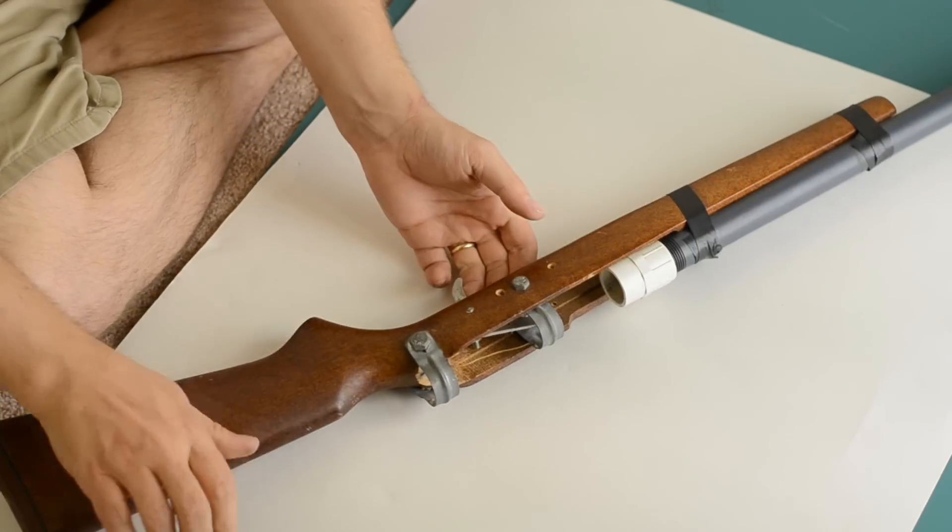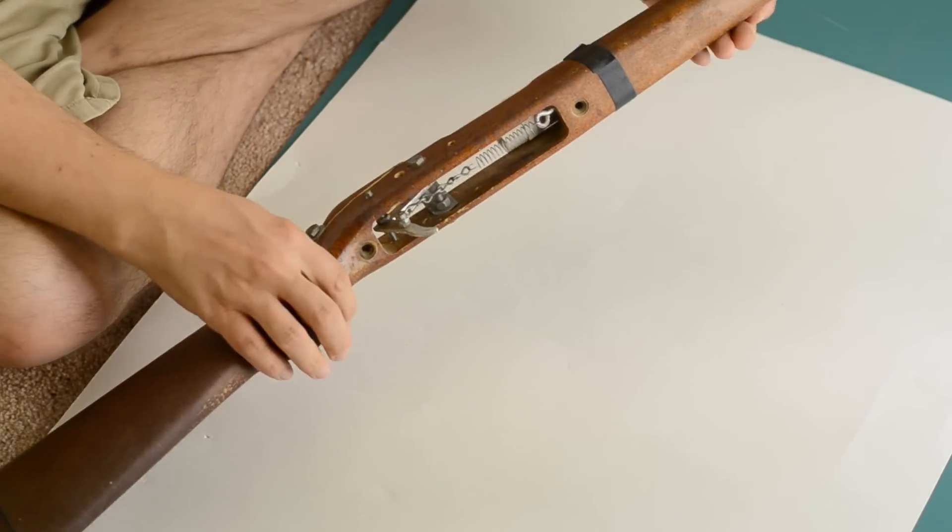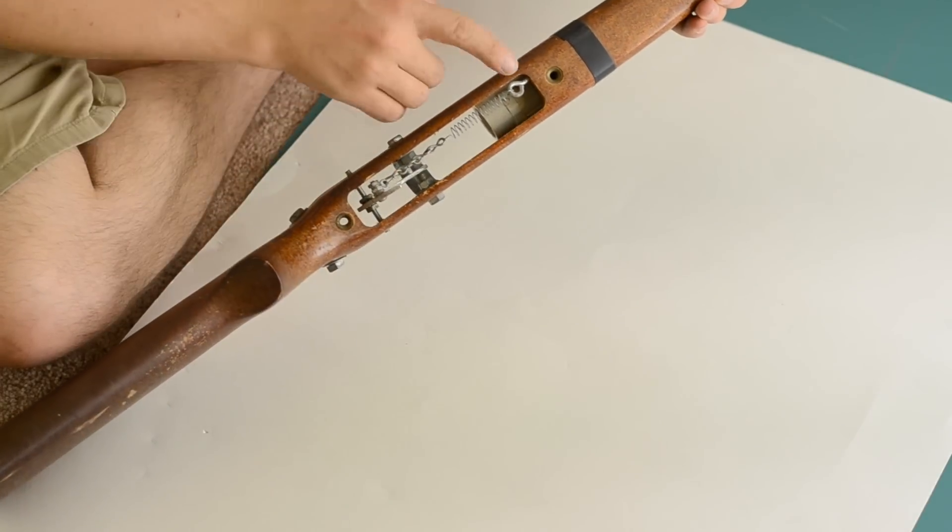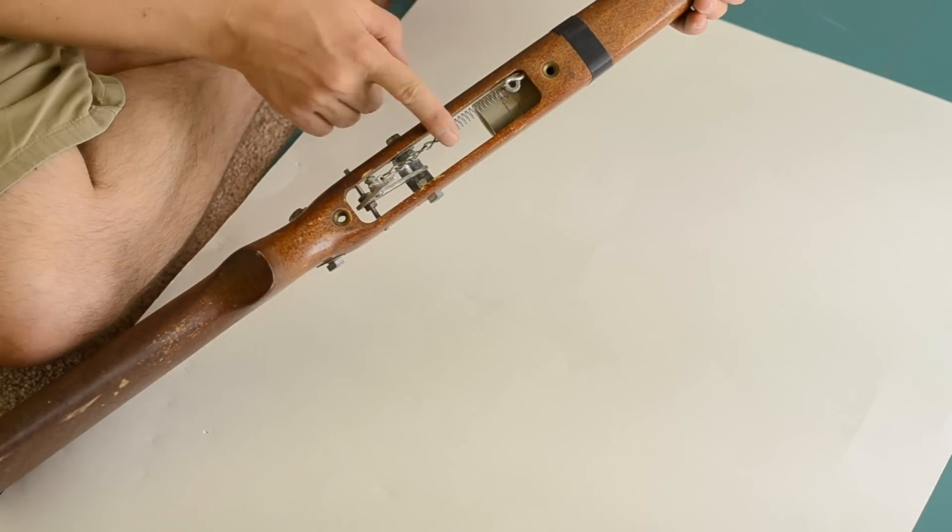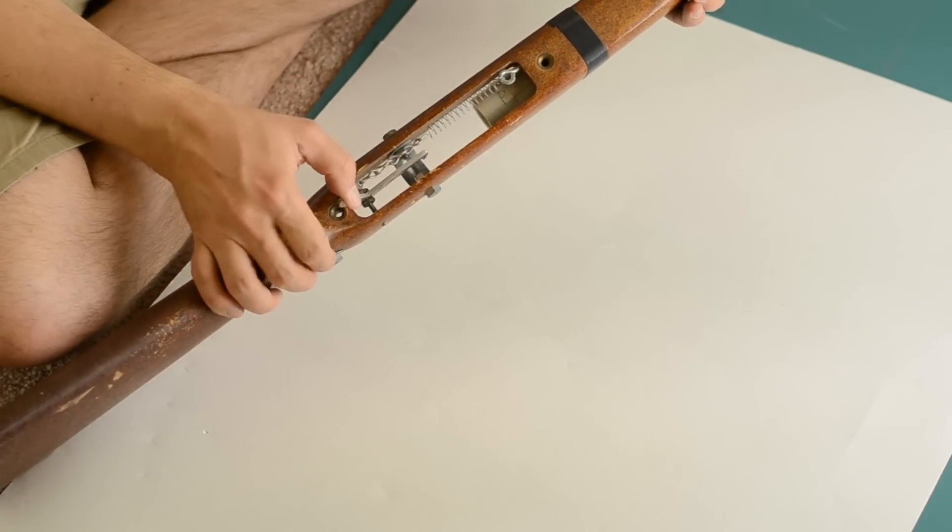Okay. There's the bolt. The action in the gun is pretty simple. Just an eye screw with a spring and a chain connected to the trigger.